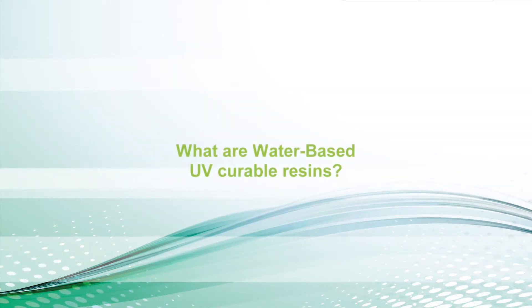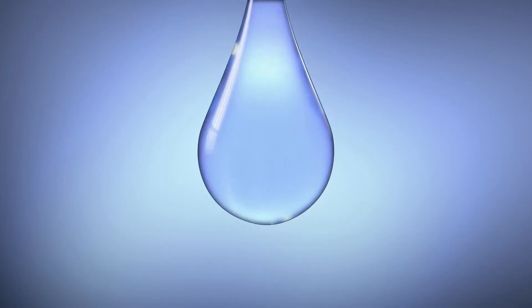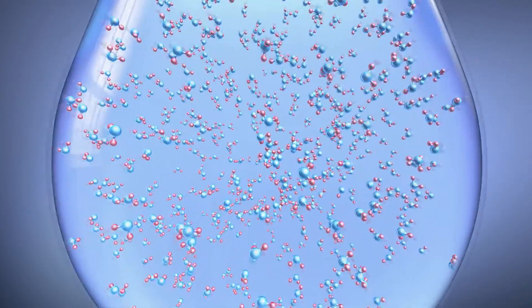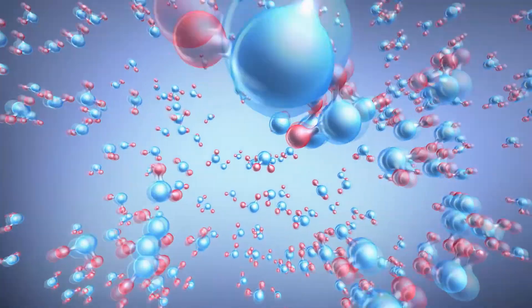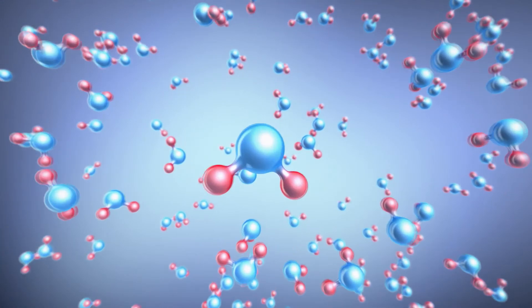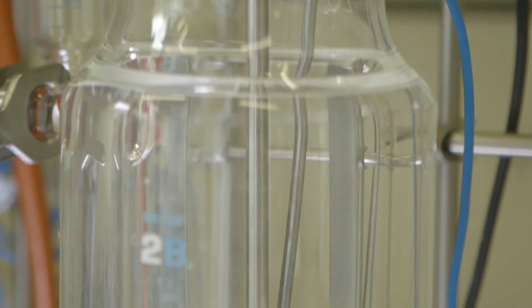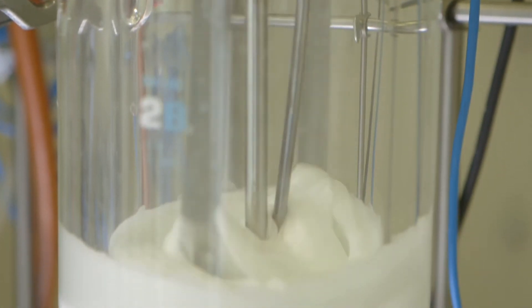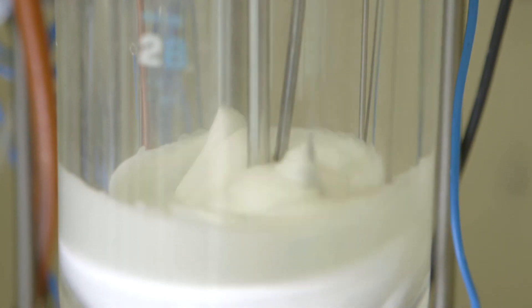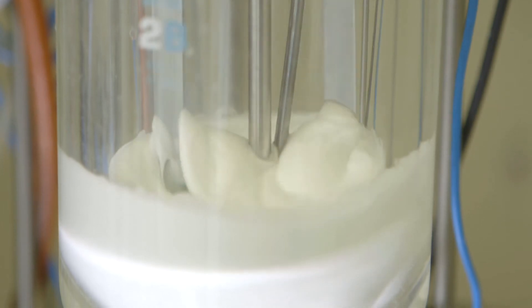What are water-based UV curable resins? The heart of water-based UV curable resins are very small polymer particles dispersed in water. Water-based dispersions and emulsions have a milky translucent white appearance and turn transparent upon cure after water evaporation and curing.